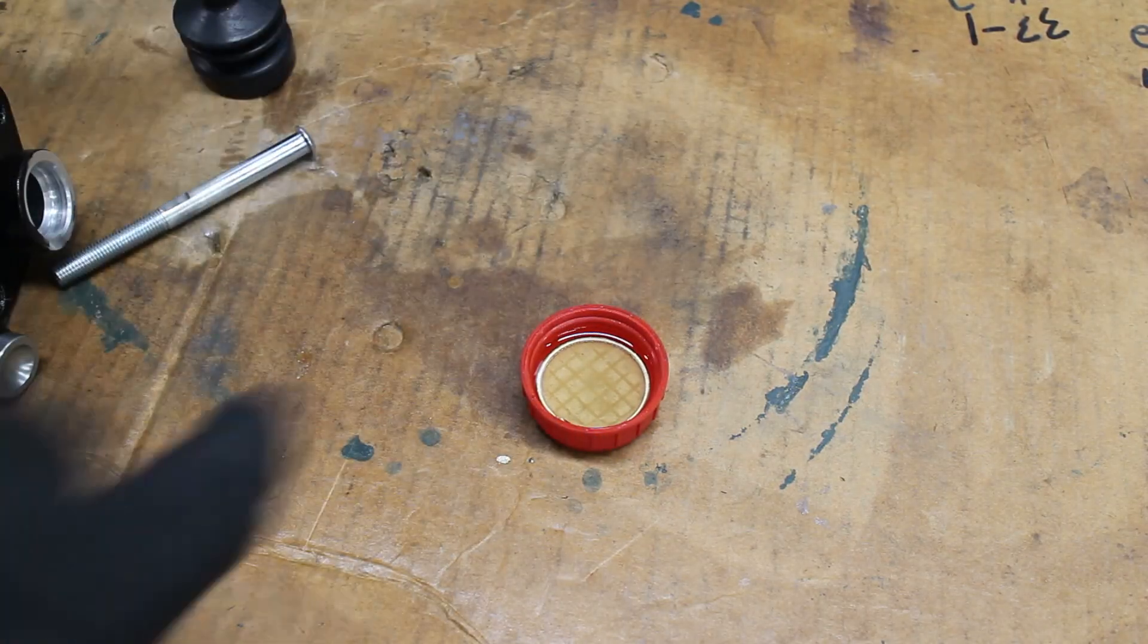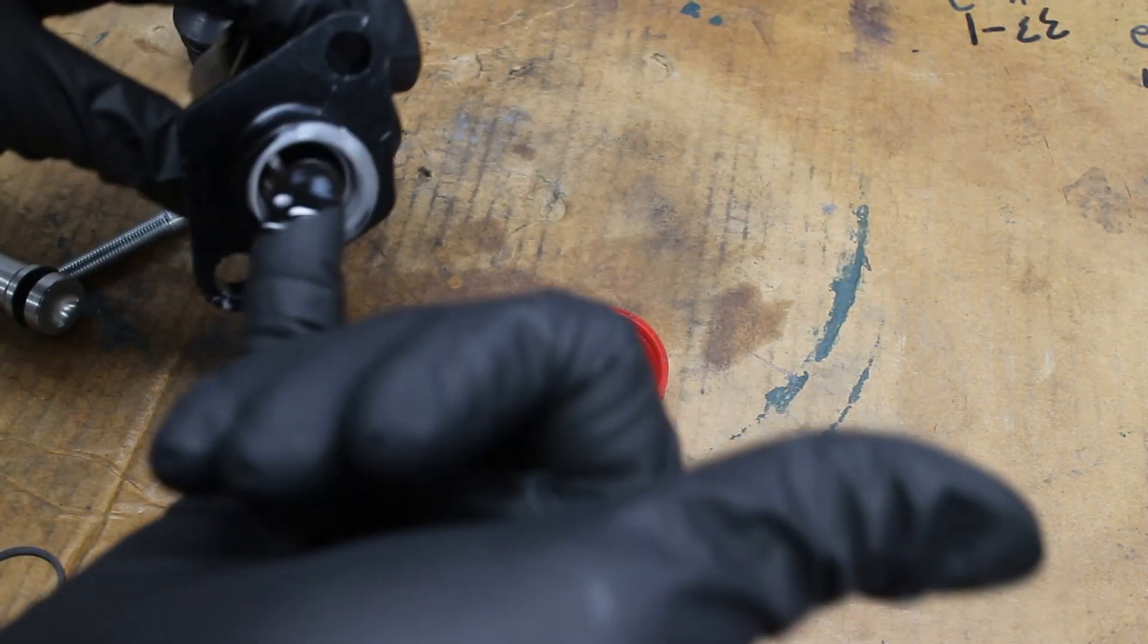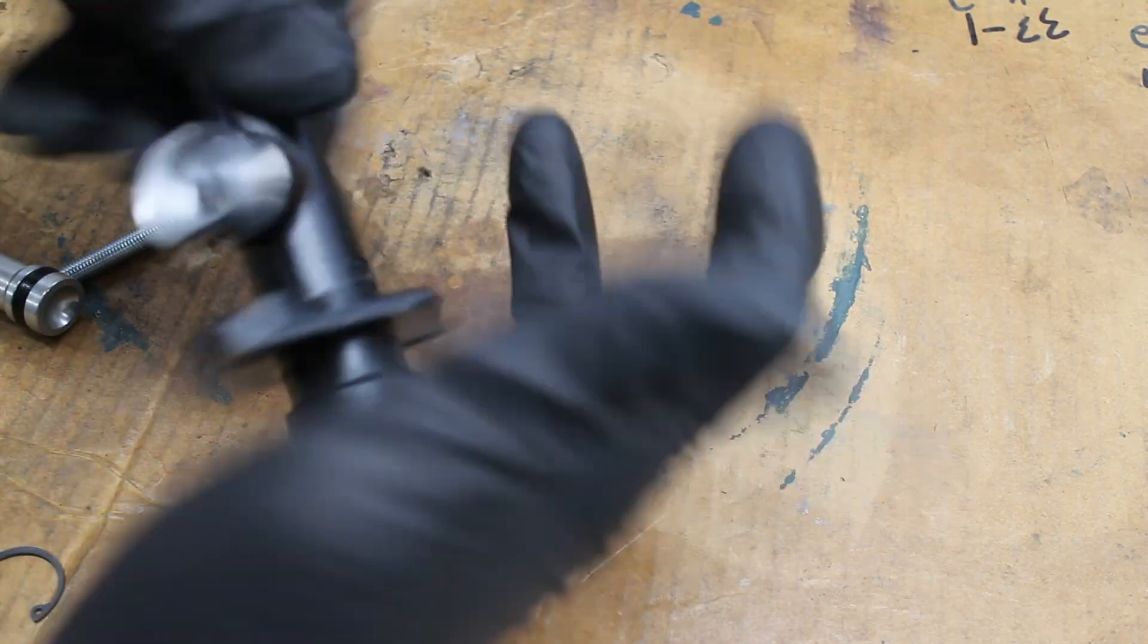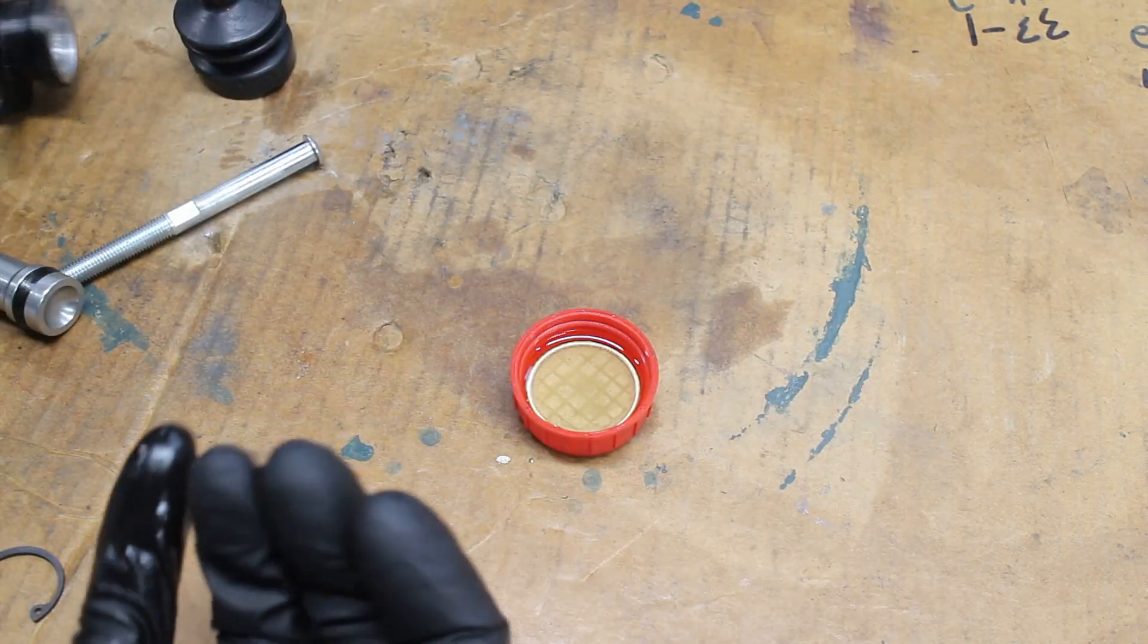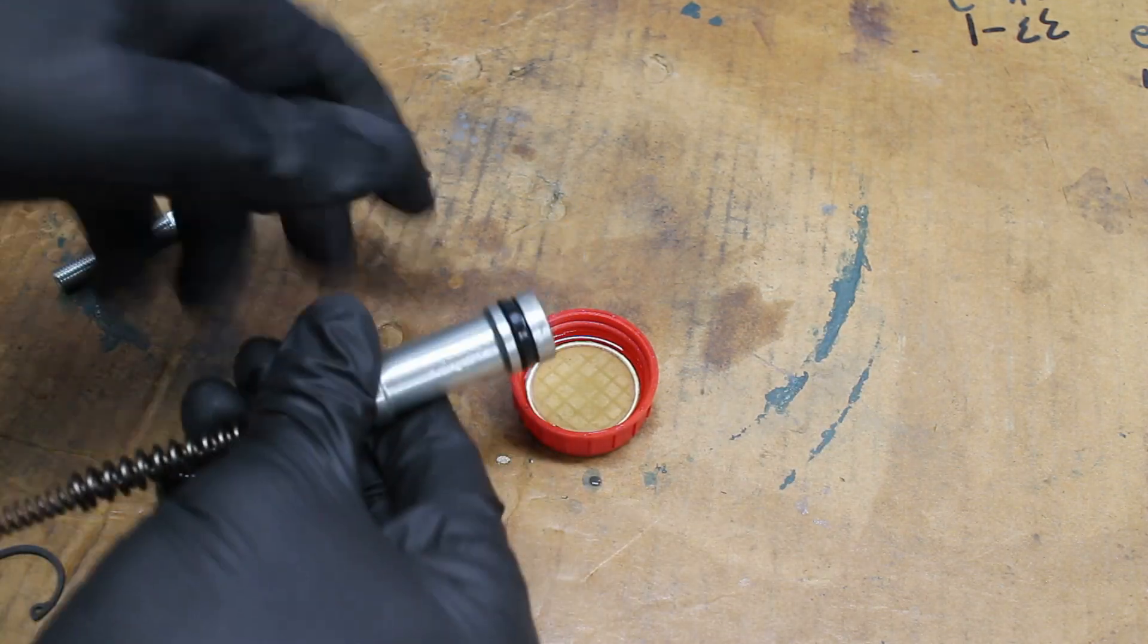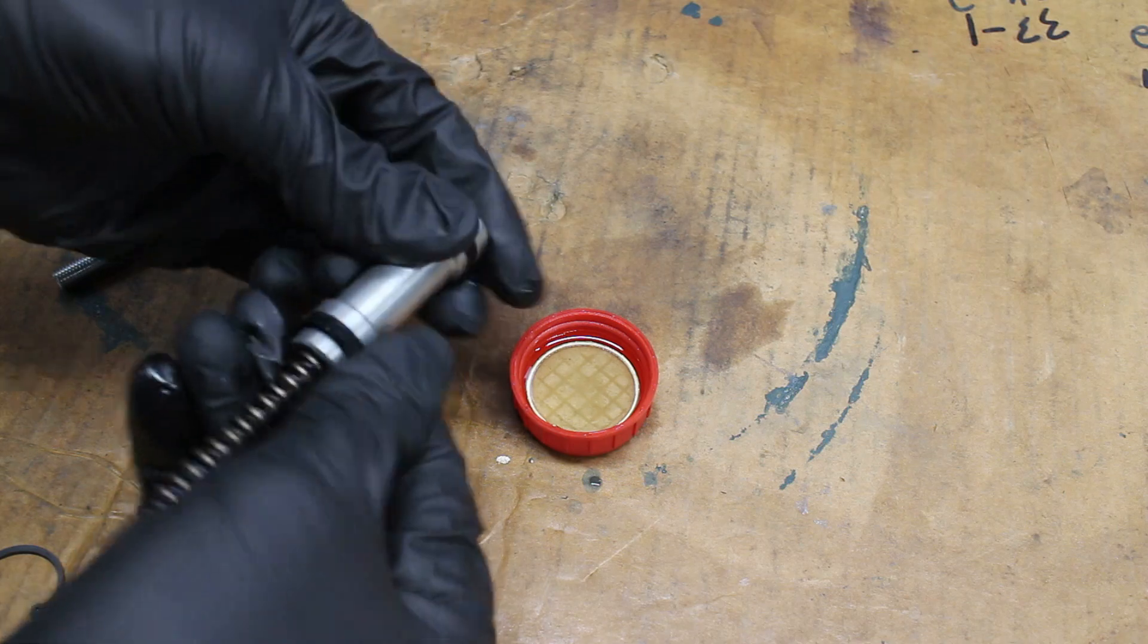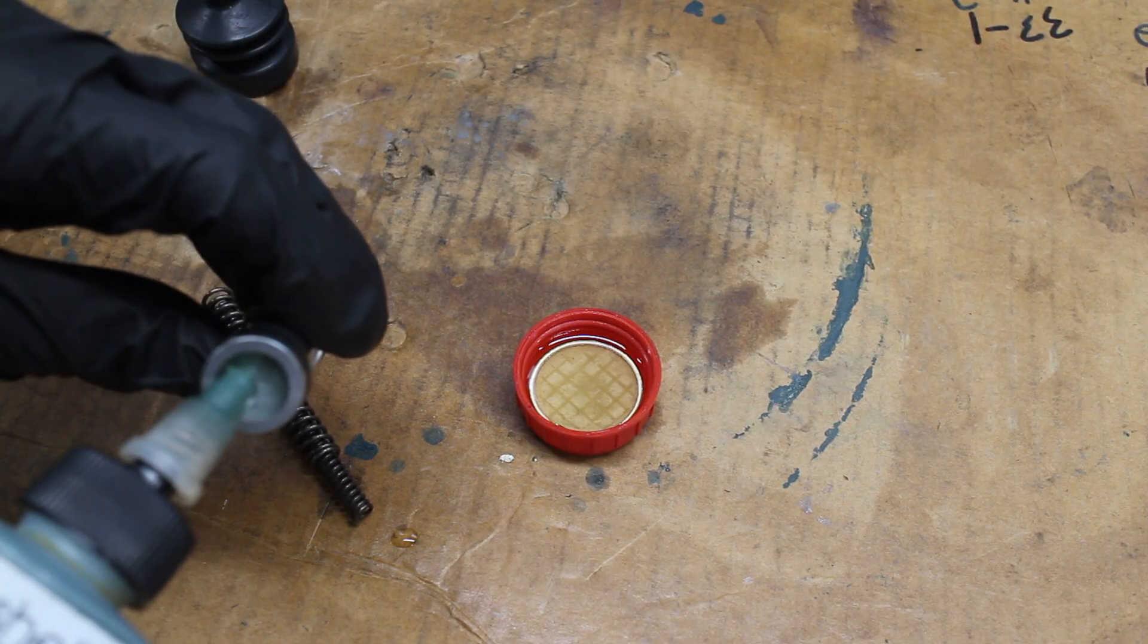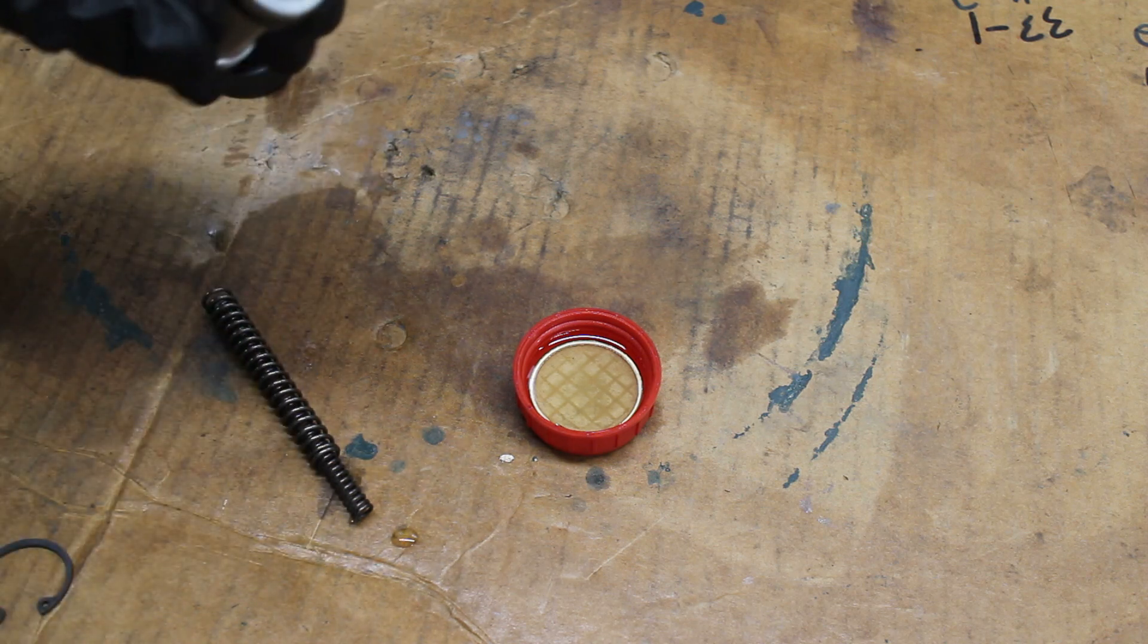Some fresh brake fluid is used to lubricate the bore and the main piston. Some Aeroshell 33 grease is used on the pin and the bucket.